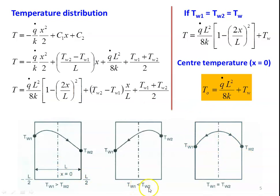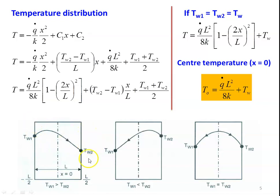When TW1 is less than TW2, the left side surface temperature is lower and the right side surface temperature is higher, so the peak temperature is shifted towards the right side. When TW1 is greater than TW2, the peak temperature is shifted towards the left side. The most ideal situation is when the wall temperatures are equal: the center temperature is maximum and heat transfer is equal on both sides.